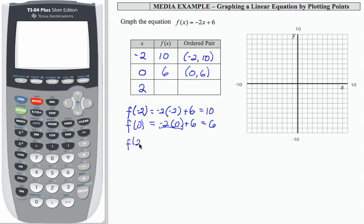If my input is 2, that becomes negative 2 times 2 plus 6, which is negative 4 plus 6 or 2. So I have my ordered pairs.